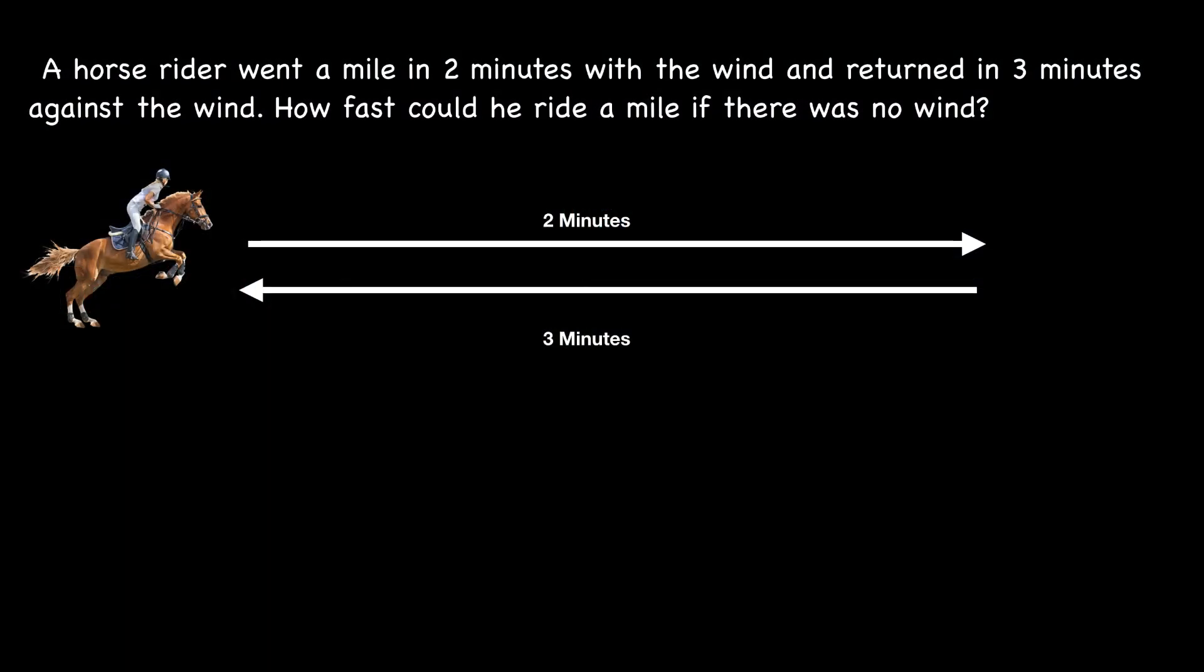Most of us will proceed like this: if a rider goes a mile in two minutes with the wind and returns against the wind in three minutes, that two and three equal five should give a correct average, so the time taken should be two and a half minutes. We find this answer to be incorrect because the wind has helped him for only two minutes while it has worked adversely for three minutes.